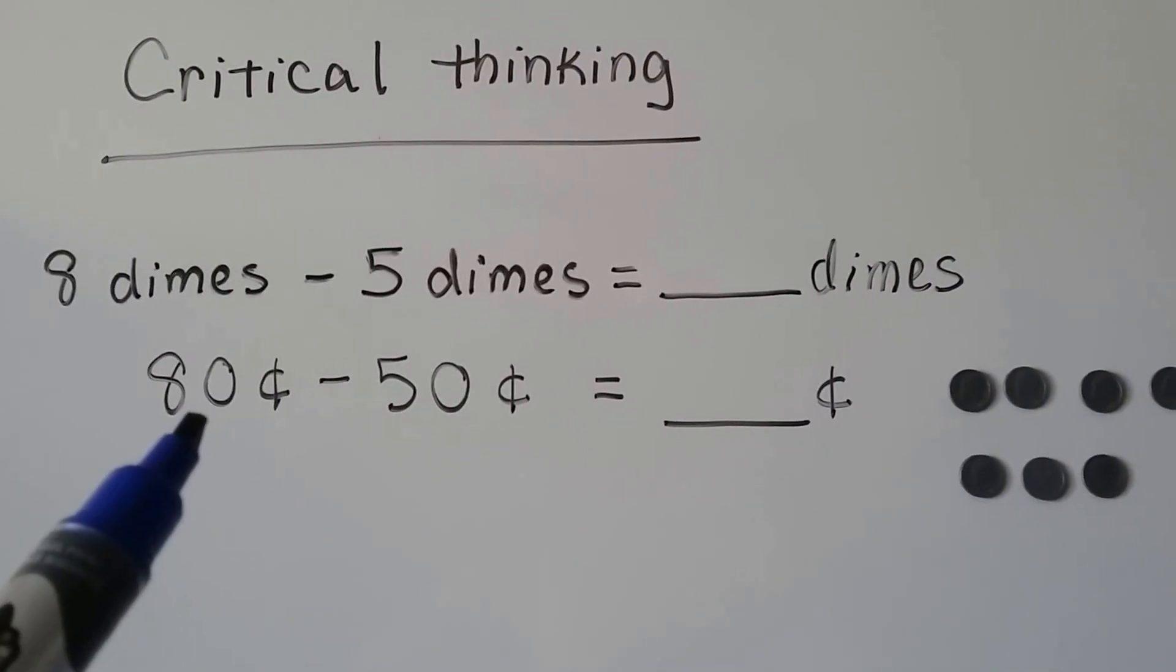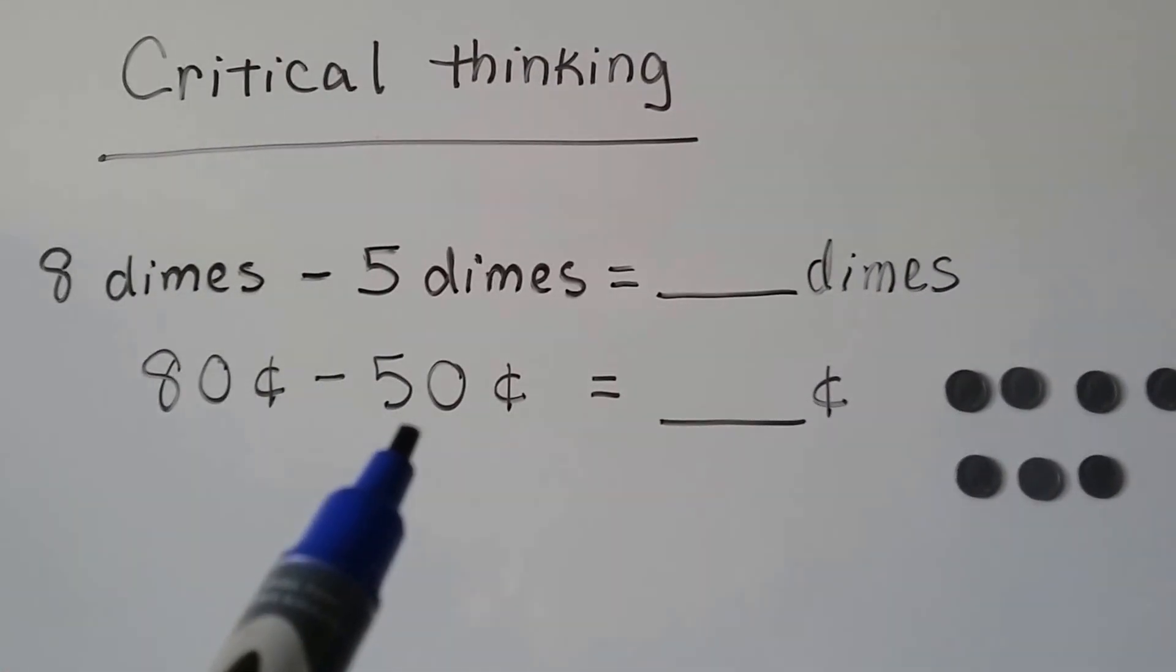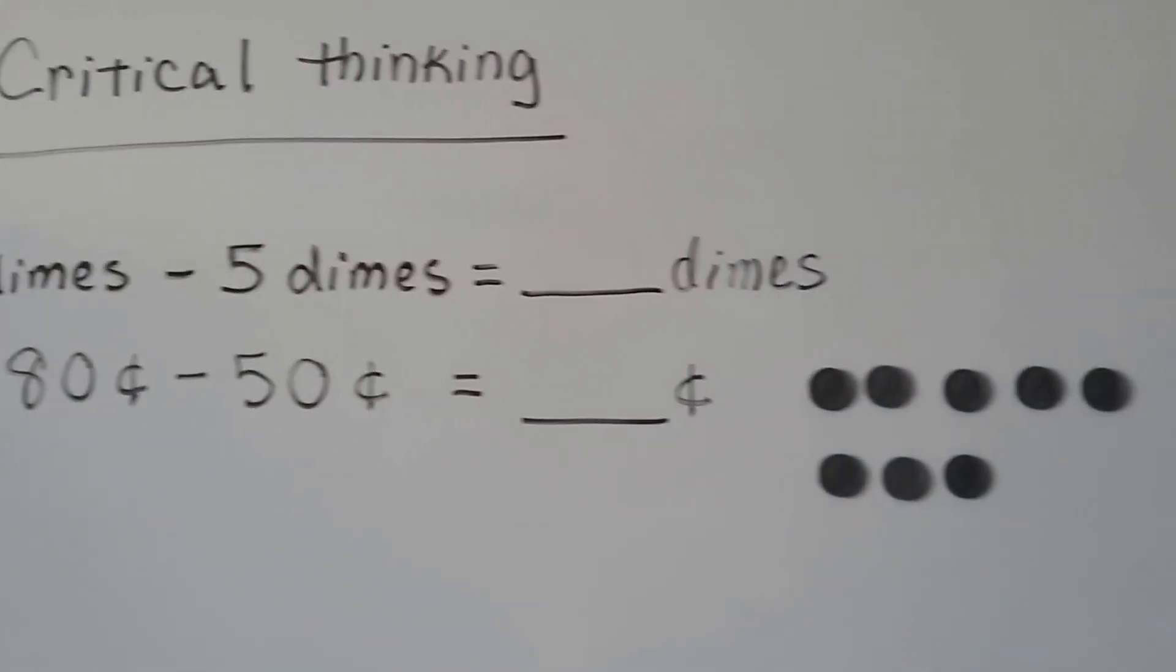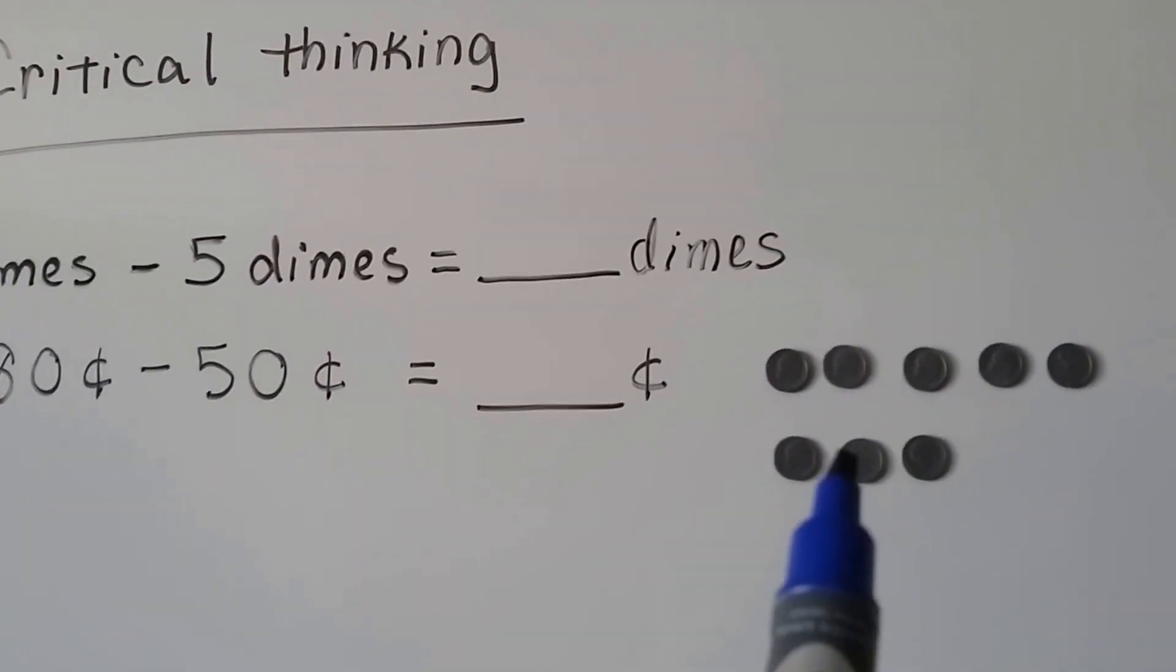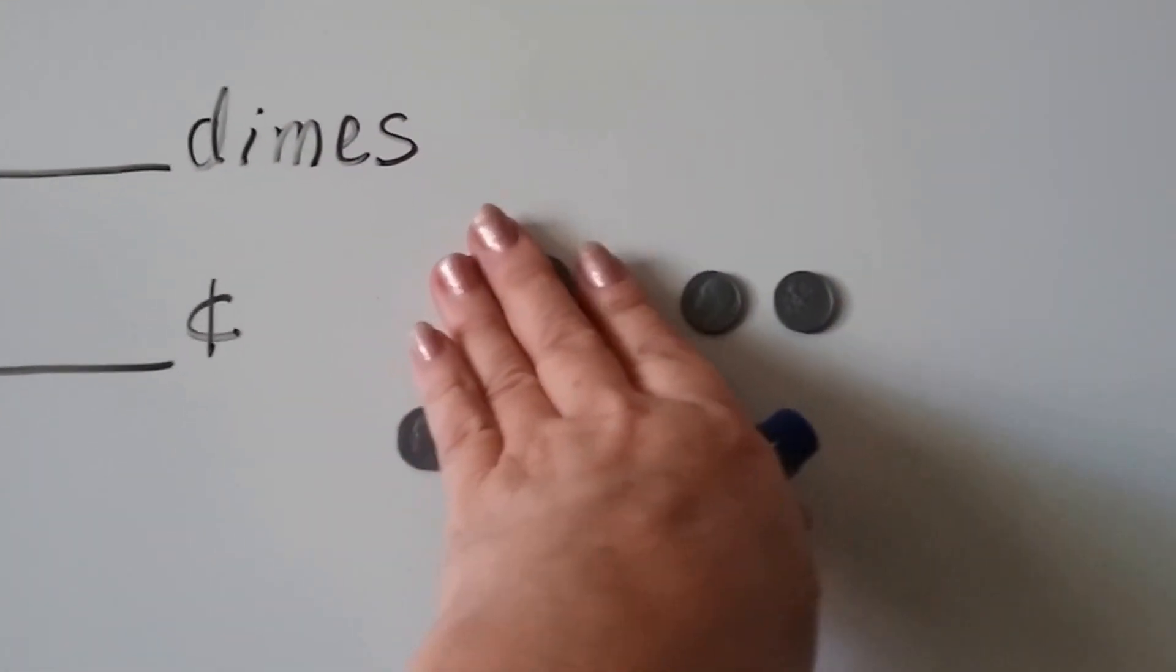Eight dimes is eighty cents, that's eight tens, and five dimes would be fifty cents. If we took five of these dimes away, we could take these five away, right?